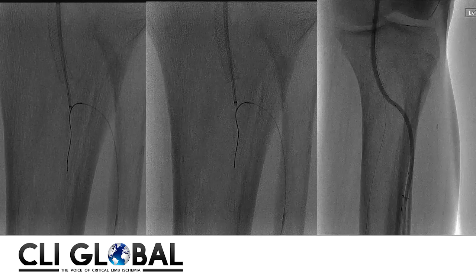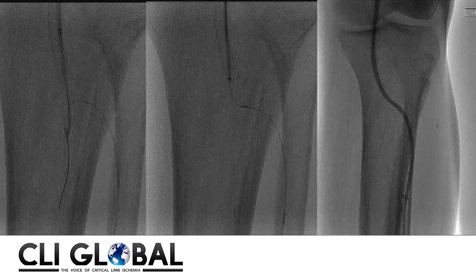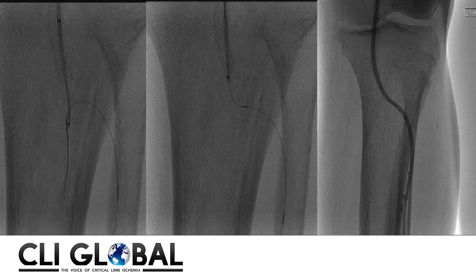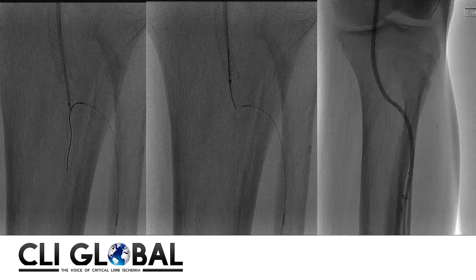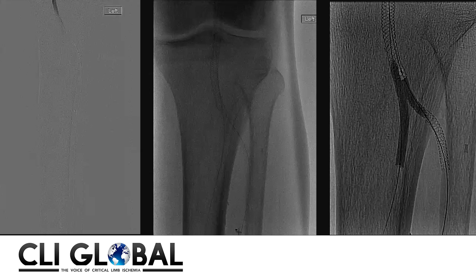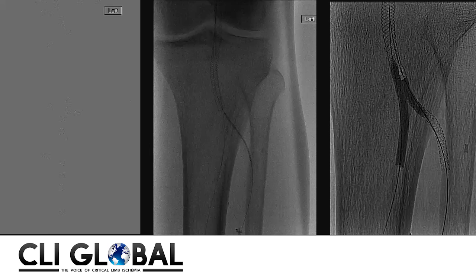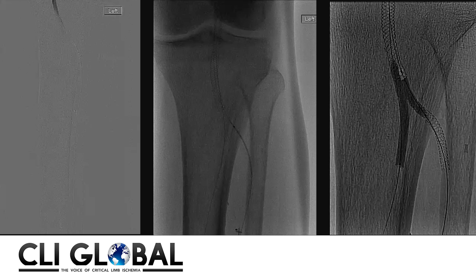Importantly, we had a wire securing our TPT trunk into the posterior tibial artery. The angiographic pictures clearly show that flow through the posterior tibial artery and TPT trunk is much better than the anterior tibial artery, which is clearly due to a flow-limiting dissection involving the ostium of the anterior tibial artery.